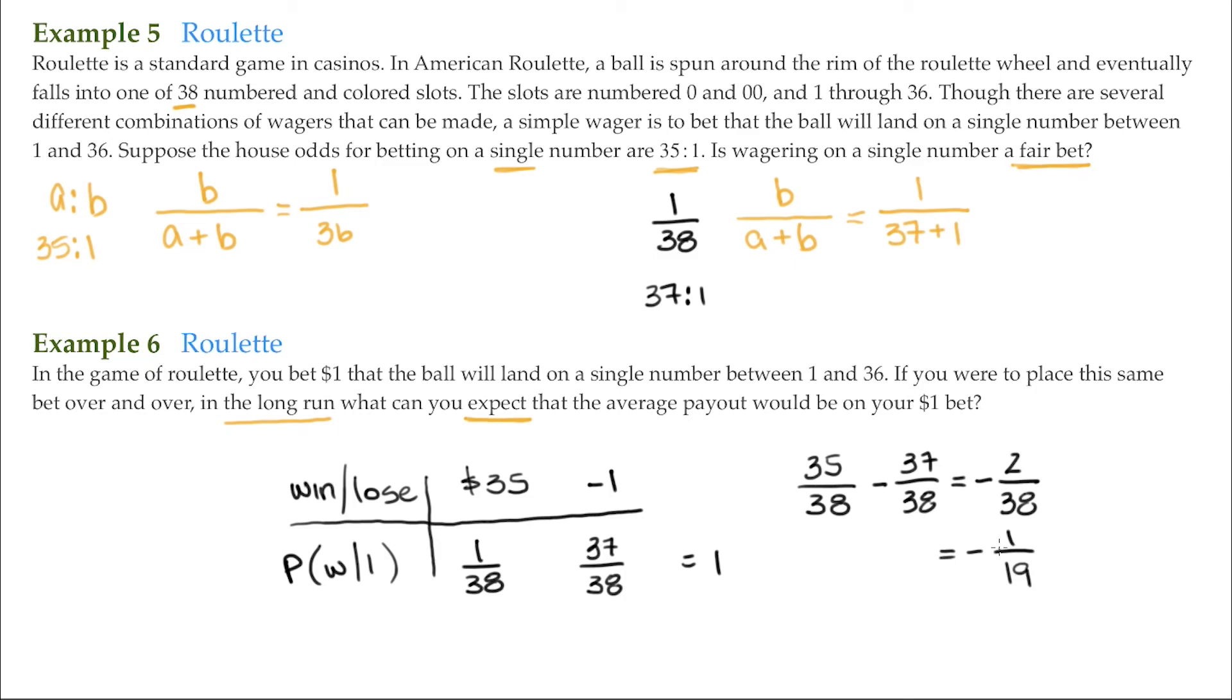So what does this come out to be? Well, on our calculators, that's going to come out to be approximately negative 0.0526. So what does that mean? Well, that means in the long run, every time I bet a dollar, I can expect to lose, since it's negative. I can expect to lose about 5.26 cents every time I play. And there you go.